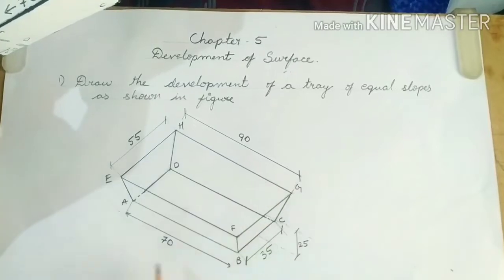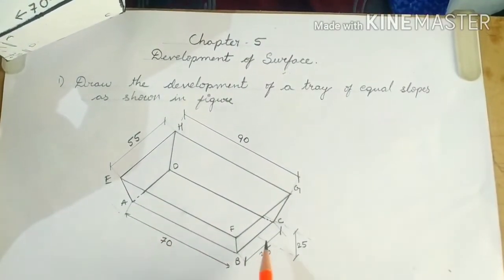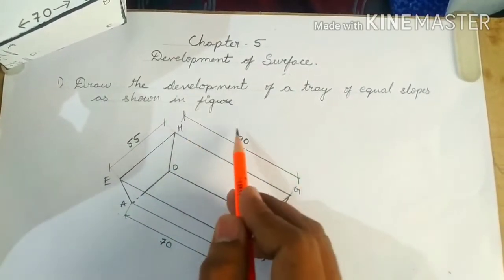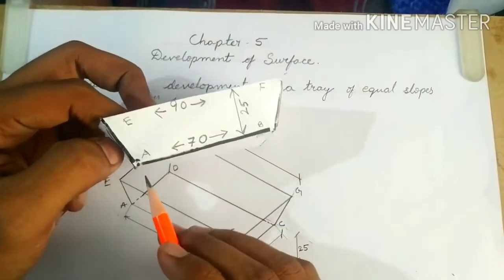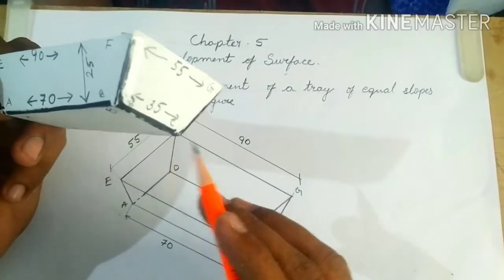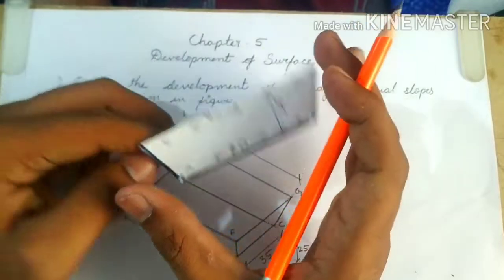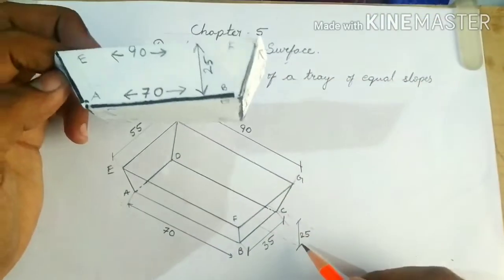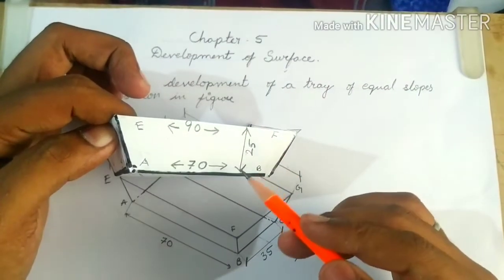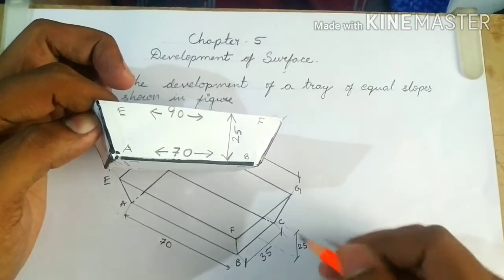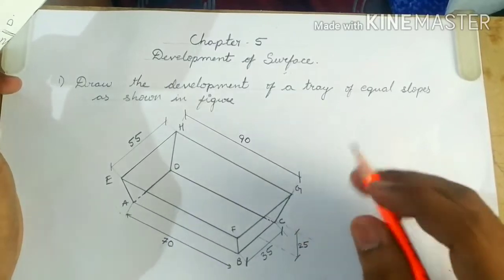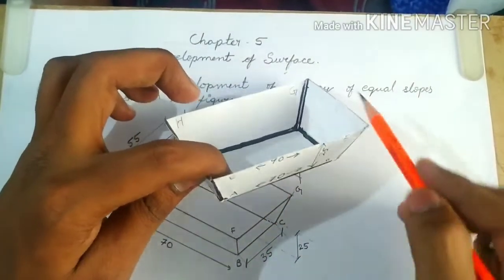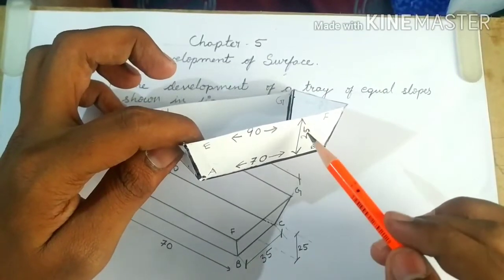The bottom rectangle has dimensions of 70mm by 35mm, whereas the topmost rectangle has dimensions of 90mm by 55mm. These two rectangles are at a distance of 25mm from each other. This 25mm is a vertical height — if an inclined height were given we would treat it differently, but in this case it is a vertical height.